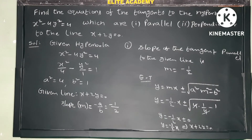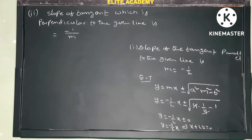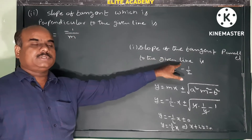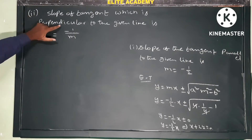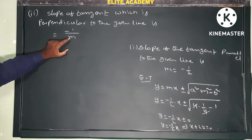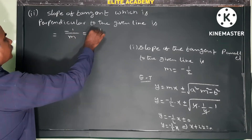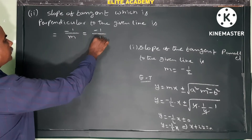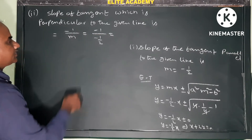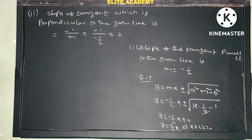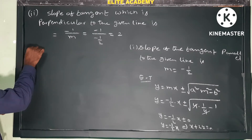Next, find the perpendicular tangent. The slope of a tangent perpendicular to the given line uses the formula: slope equals minus 1 by m, where m is the slope of the given line, which is minus 1 by 2. So the new slope equals minus 1 divided by minus 1 by 2, giving slope equals 2. This is the slope of the perpendicular tangent.